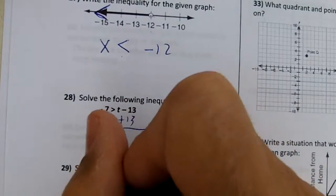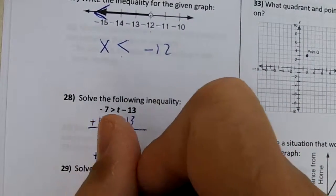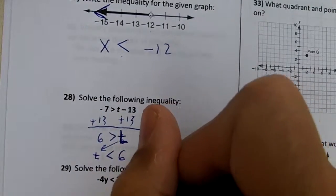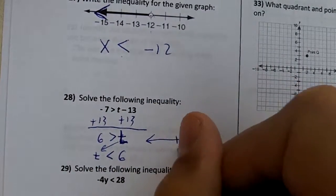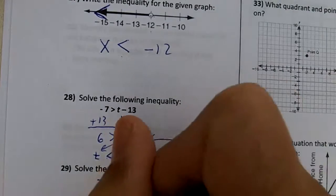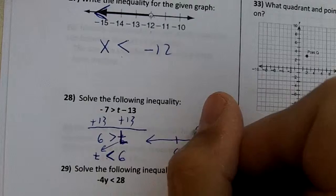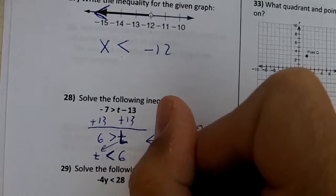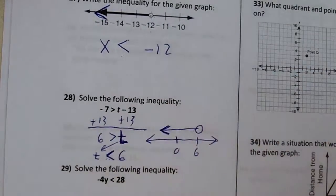Now then, usually you want your letter on the left. So I'm going to flip this and make it T less than 6. That means on our number line, we'll put 0 and 6. We don't have an equal bar. It'll be an open dot, and our inequality goes to the left. The arrow tip matches up to the inequality on your arrow.